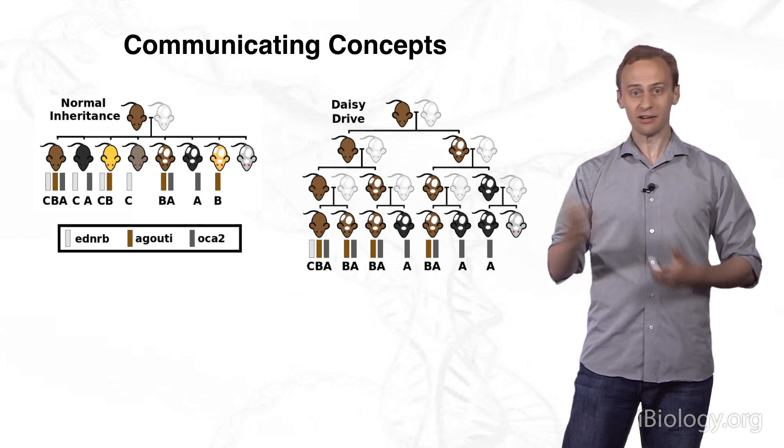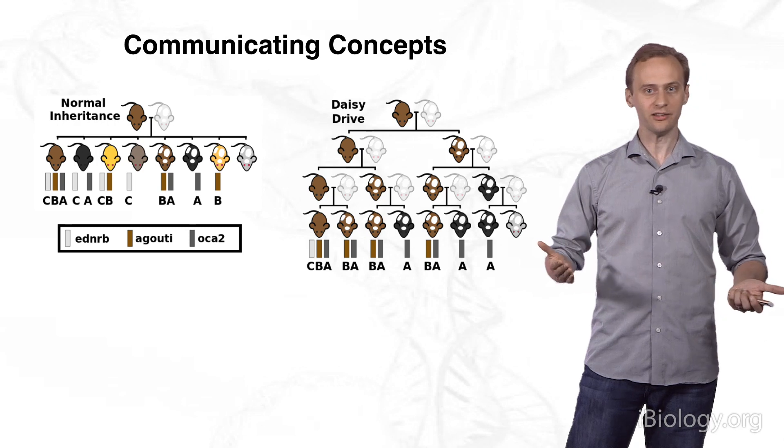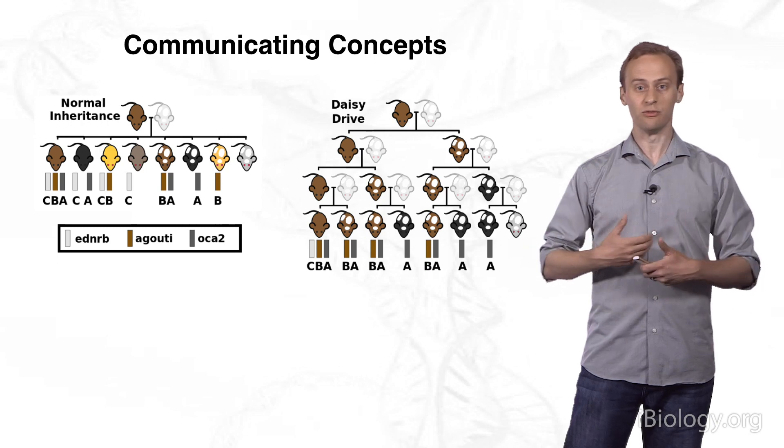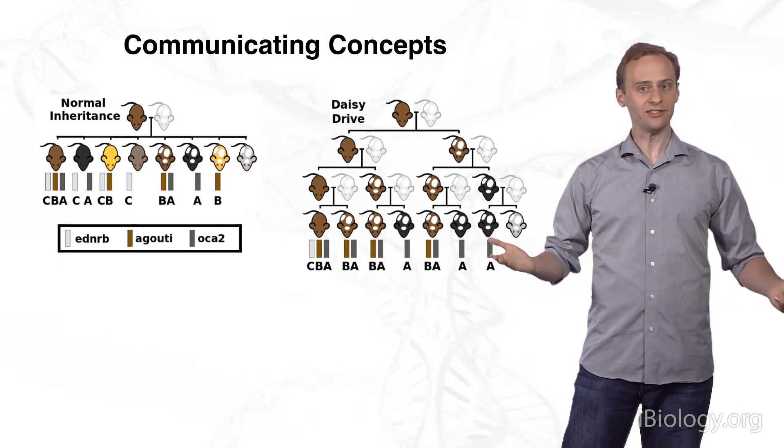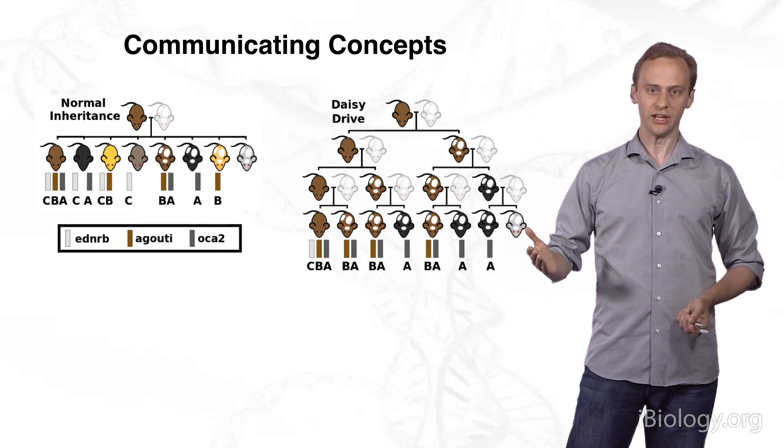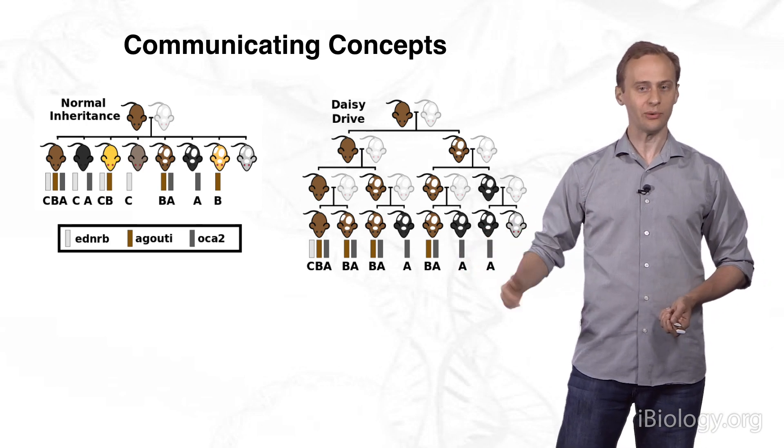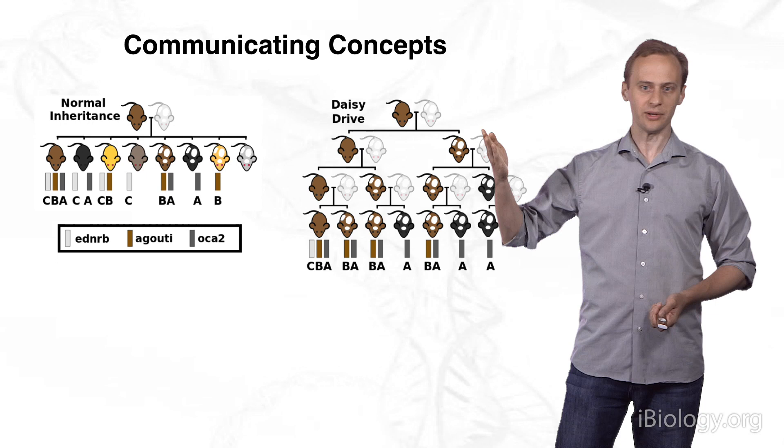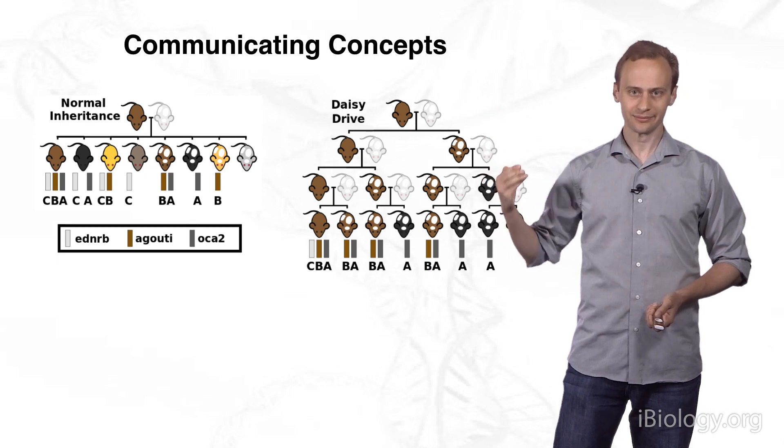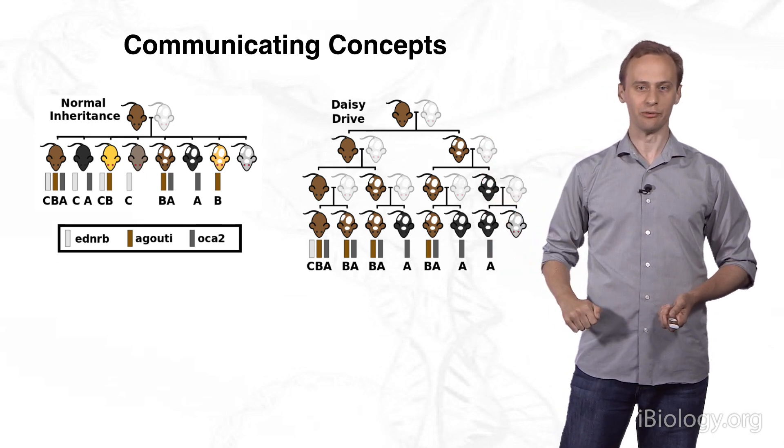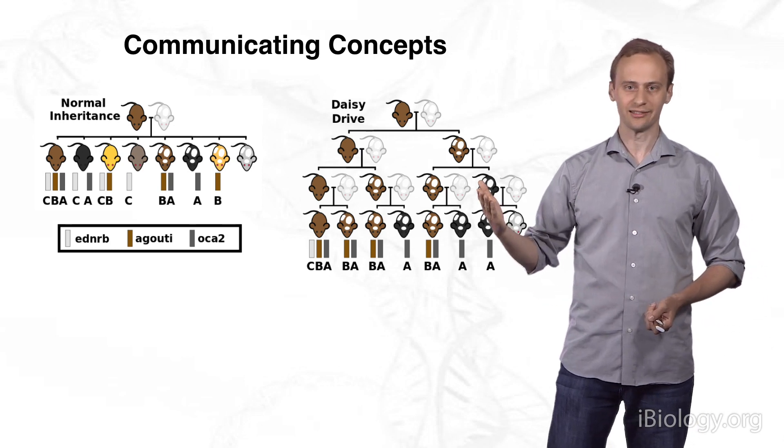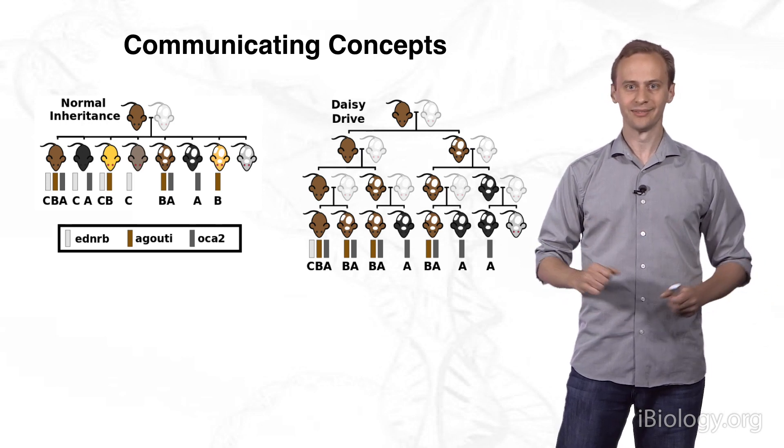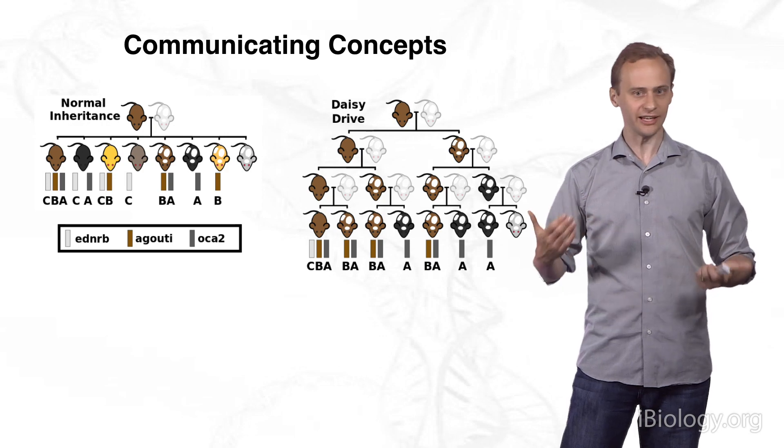My group is pursuing several different ways of addressing these problems. Number one is to communicate the concept in an understandable manner to very diverse populations. For example, with Daisy Drive, we're working to build mice in which every daisy element corresponds to a different coat color marker. We're then going to breed a family of mice in which you can see the grandparents, the parents, the kids, and then eventually the kids grow up and reproduce on their own. You'll be able to see the genetics in the coat color of each of these mice. Everyone will have their name and their own backstory in order to make a compelling story about this particular family of mice.